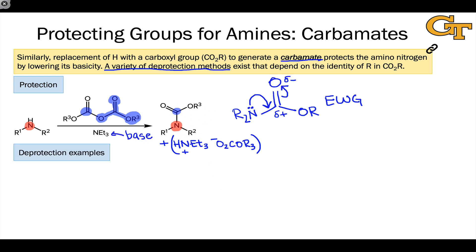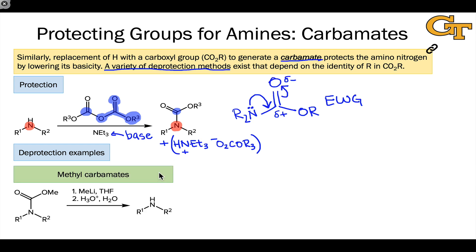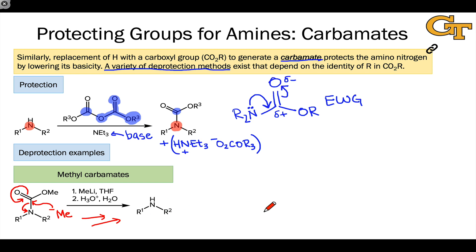A few different deprotection strategies can be used for different types of carbamates, depending on the identity of the R3 group. When that R3 group is a methyl, we end up with methyl carbamates. These can be deprotected through nucleophilic acyl substitution with a very strong nucleophile, something like methyl lithium, that adds to the carbonyl carbon and kicks off an N-minus leaving group. Upon aqueous workup, we end up with the neutral amino compound back. Nucleophilic addition and then beta elimination of the nitrogen severs this key carbon-nitrogen bond, and after proton transfer from aqueous acid, leads back to the neutral amine.